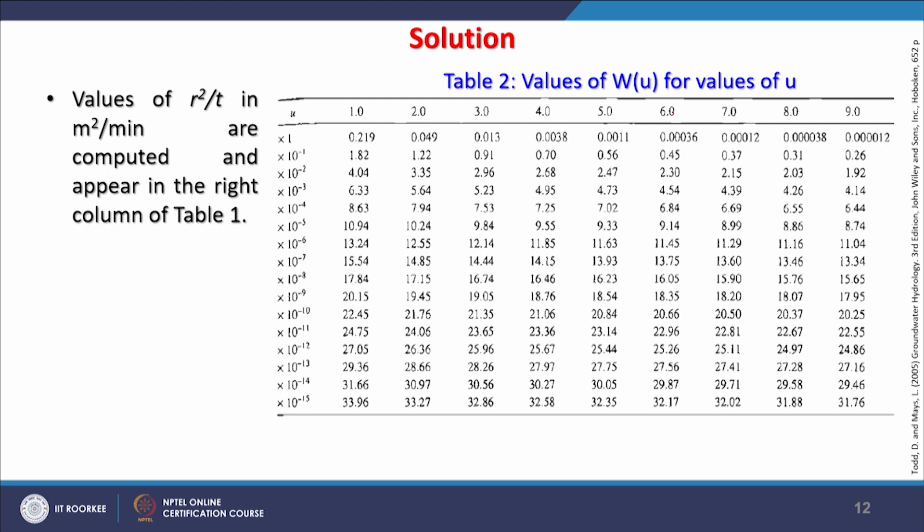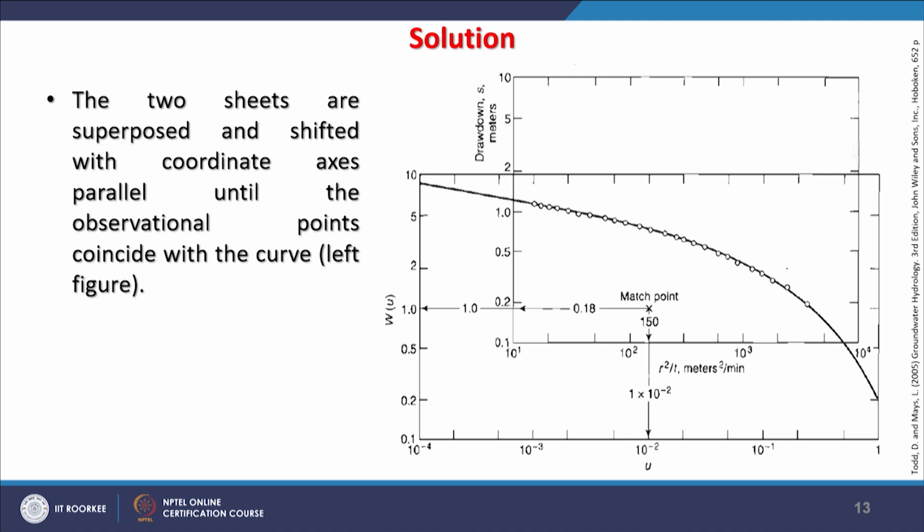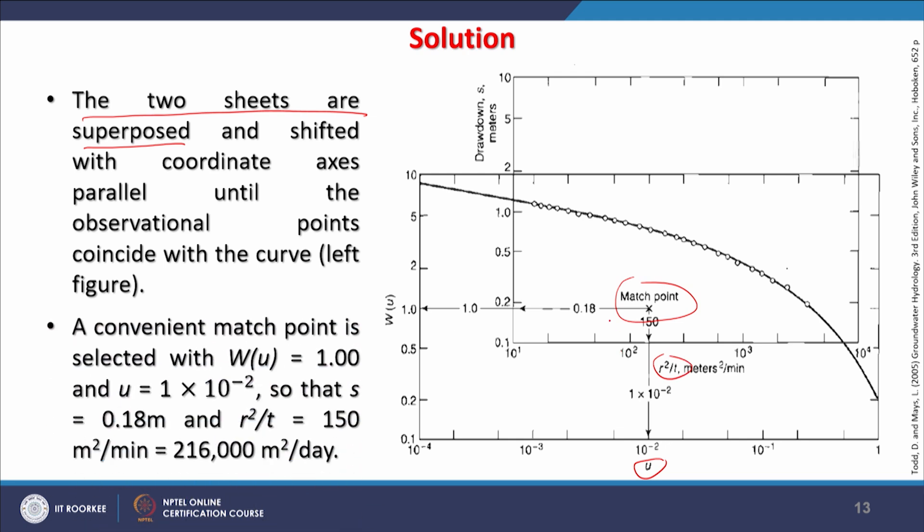Values of r²/t in square meters per minute are computed and appear in the right column of Table 1. These are the values given here. Values of w(u) and u from Table 2 are plotted on another sheet of log paper of the same size and scale, and a curve is drawn through the points. Here, like matching points, you can shift these two curves—one may be on a transparent sheet, another on that—and try to fit the values. The two sheets are superimposed (that's why it's called superimposed method) and shifted with coordinates axes parallel until the observational points coincide with the curve in the left figure.